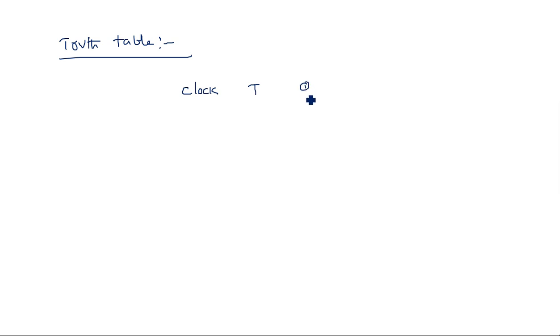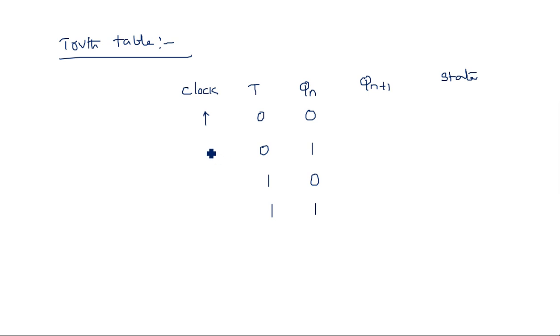The truth table of the T flip-flop has columns: clock, T, Qn (previous state), Qn+1 (next state), and status. We consider four input conditions: T=0 Qn=0, T=0 Qn=1, T=1 Qn=0, T=1 Qn=1. The clock here is having a rising edge, which is the active state — at that instant the output changes depending on the input conditions.